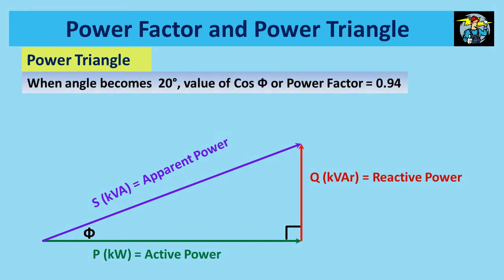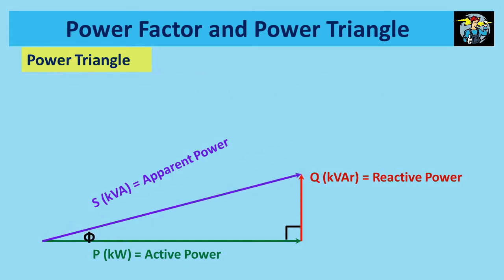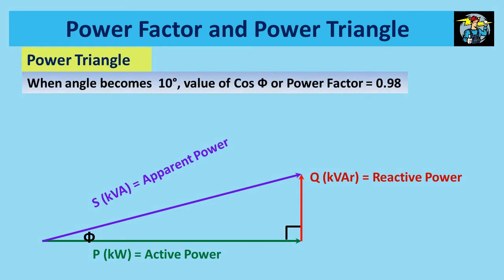Same way, when angle phi is at 20 degrees, value of cos 20 or power factor becomes 0.94. When the angle phi becomes 10 degrees, value of cos phi or power factor reaches 0.98, and you will see that the apparent power is closer to the active power line now, and the size too is getting closer to the size of the active power line.